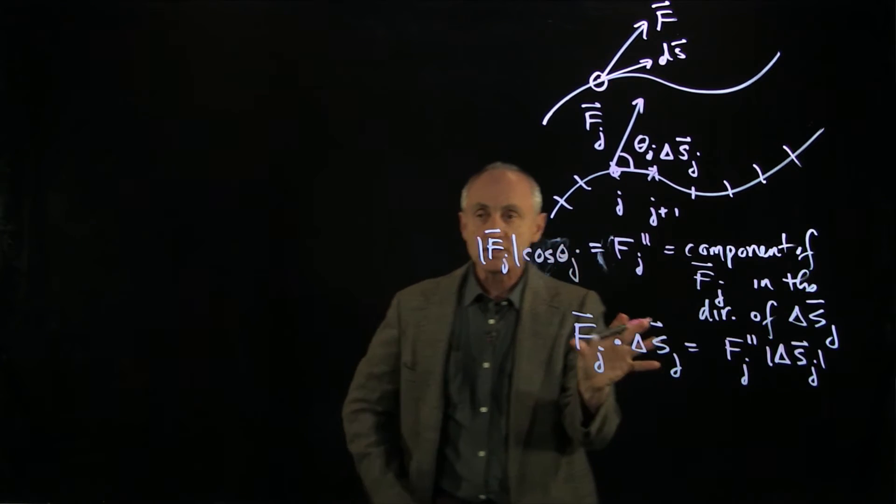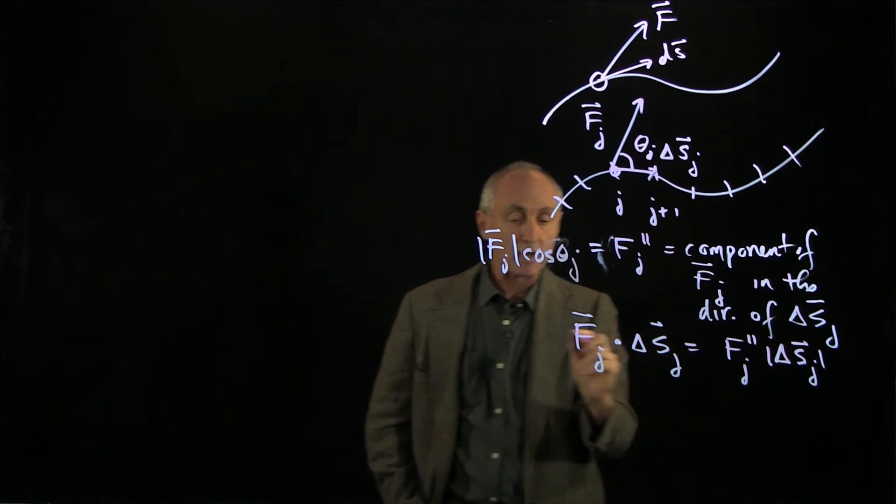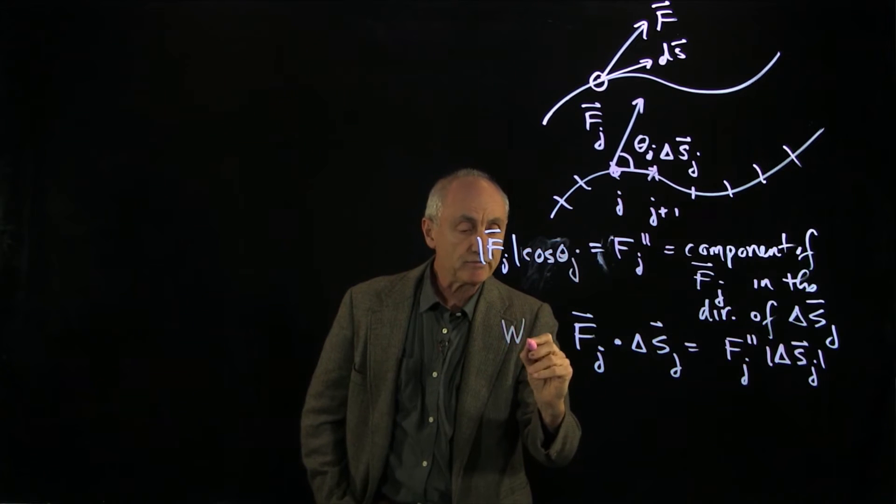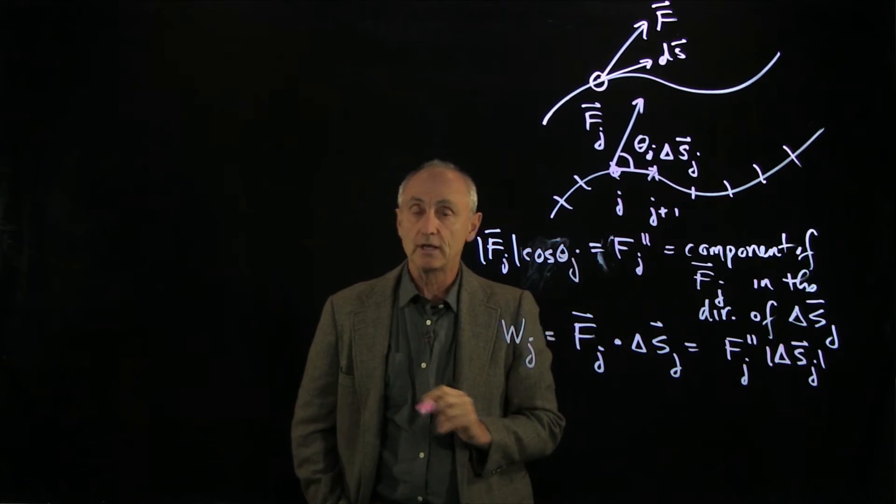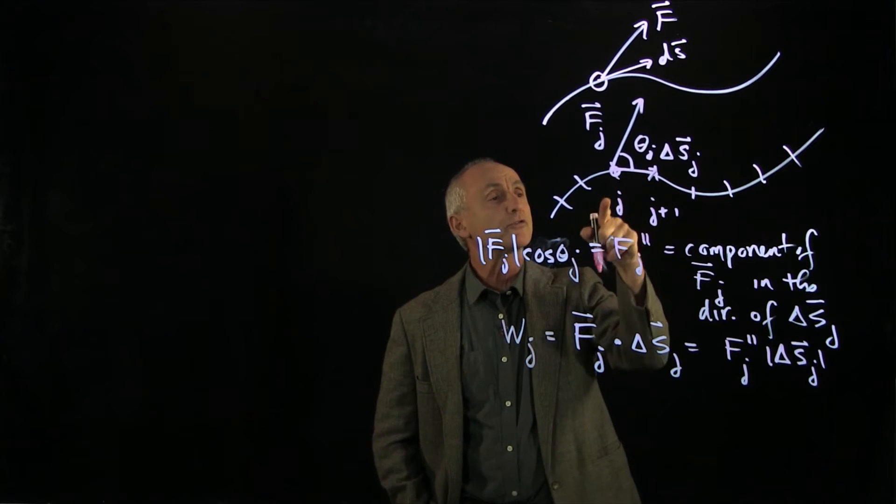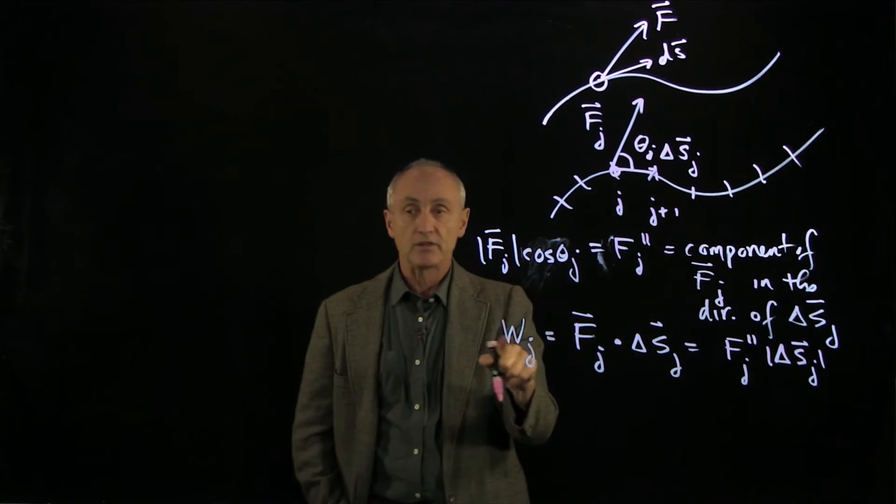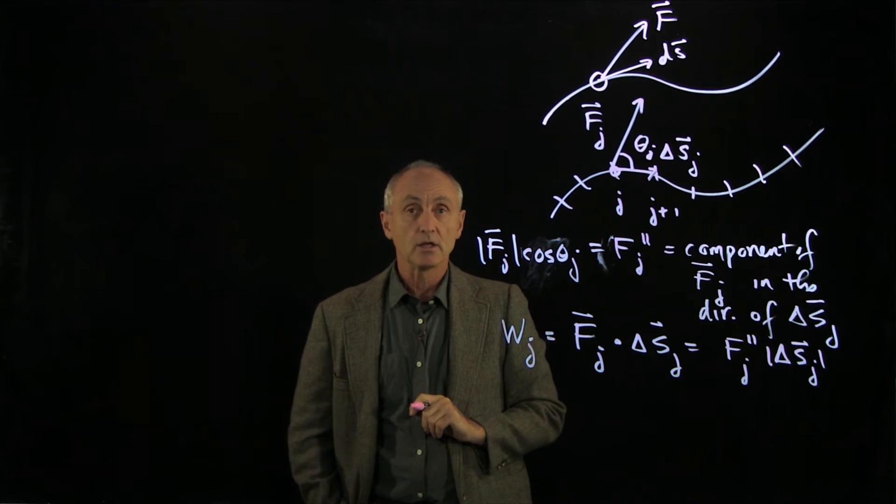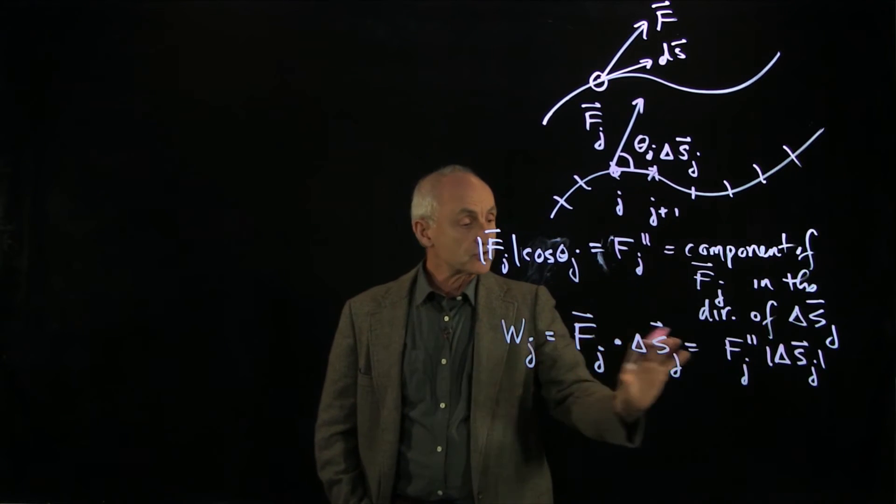Now, because this is the amount of force in the direction of the motion, that's how we've defined work done. And we'll symbolize the work done in taking the particle from j to j plus 1 by the symbol wj. And now, this is a scalar quantity.